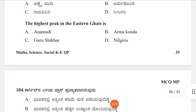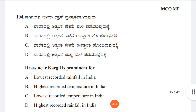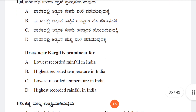Question 104: Drash near Kargil is prominent for Option A: Lowest recorded rainfall in India, Option B: Highest recorded temperature in India, Option C: Lowest recorded temperature in India, Option D: Highest recorded rainfall in India. The correct answer is Option C, lowest recorded temperature in India.